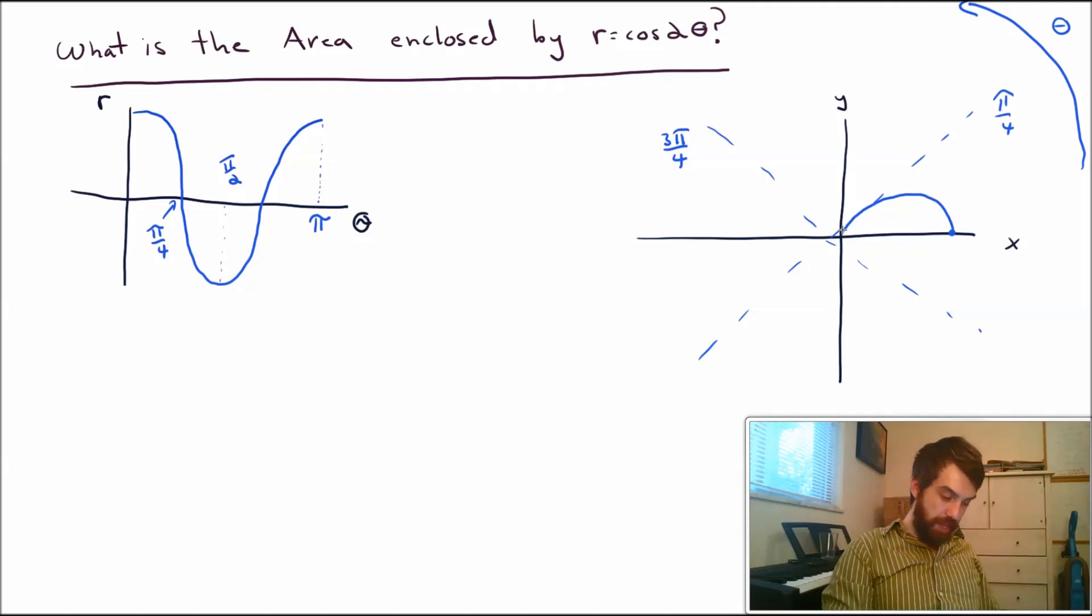Then what happens? Then I'm going between the pi over 4 and the pi over 2. So now all of my r values are going to be negative. My thetas are now in this region here, going between the pi over 4 and the pi over 2. But all of my r's are going to be negative, and they start at 0 and go down to minus 1. Negative values getting bigger, and finally ending up at the value of minus 1.